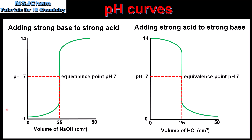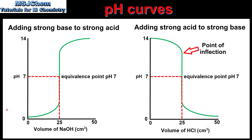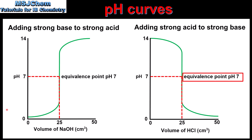On the right we have the pH curve for adding a strong acid to a strong base, which is almost the reverse. We start at a high pH of 14 because we have a strong base. As the acid is added the pH decreases until we reach the point of inflection where we see a sharp decrease, and the curve ends at approximately pH 1. The equivalence point is also pH 7 because the salt produced from a strong acid and a strong base is a neutral salt, which has a pH of 7 at 298 K.